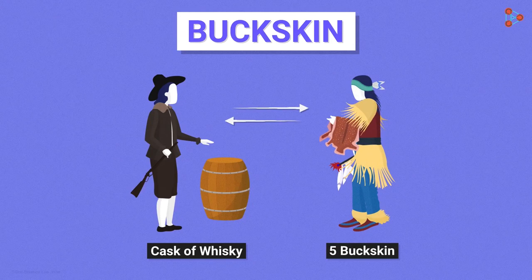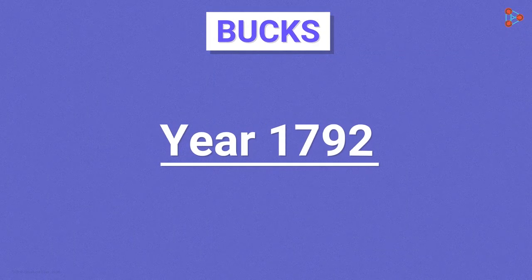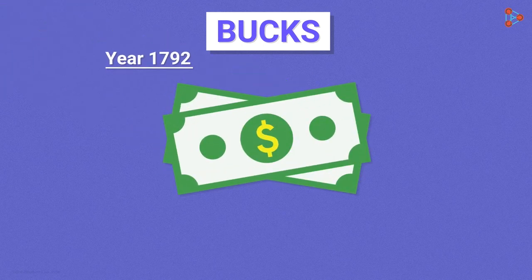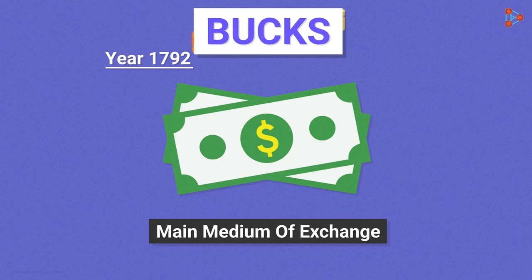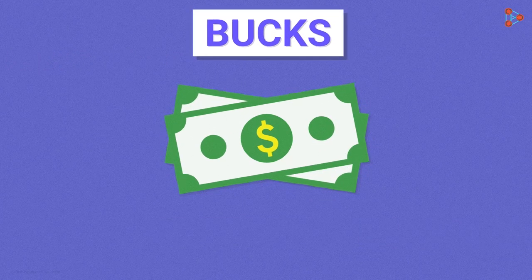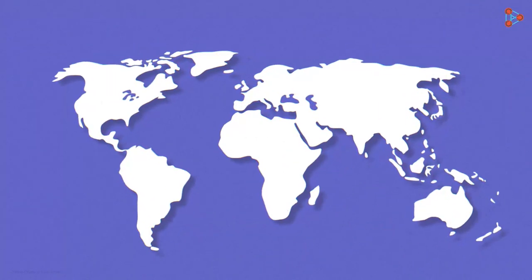As time passed, buck skin was shortened to bucks. Around the year 1792, US dollars were introduced, which soon became the main medium of exchange. Although people stopped trading in buckskins, the word buck still seemed to prevail in the minds of the people as a reference for money. This is how the slang buck for money originated in the US and then spread out worldwide.